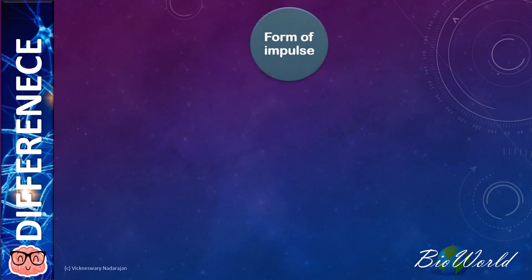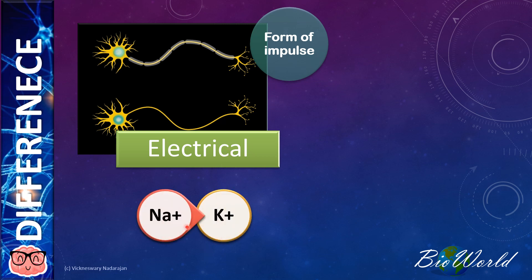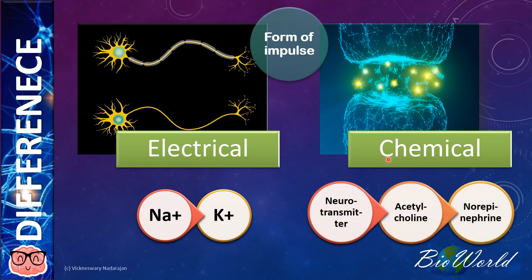For the second difference, we talk about the form of impulse. In the axon, the impulse travels as an electrical impulse due to the influx of sodium or efflux of potassium ions. Whereas at the synapse, the impulse transmission is chemical in nature. It's made up of neurotransmitters such as acetylcholine or norepinephrine.